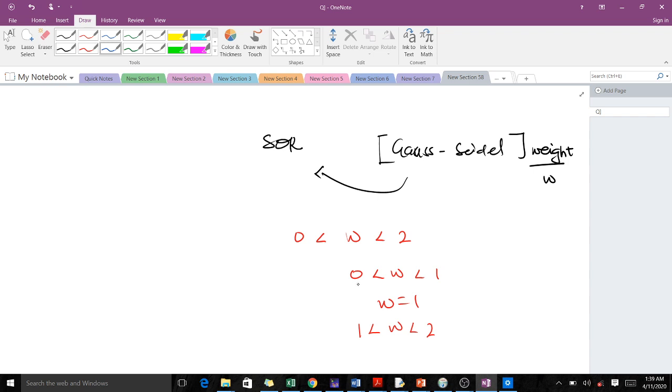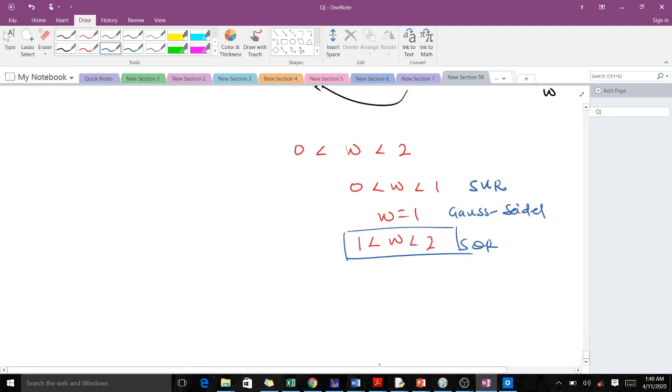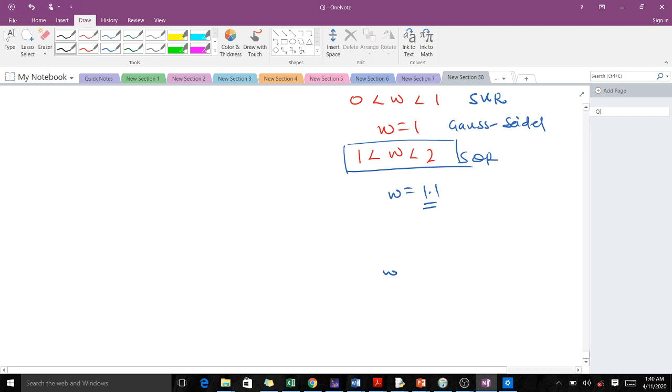When our weight is between zero and one, we say we are doing successive under relaxation. When our weight equals one, we have the Gauss-Seidel. If our weight omega is between one and two, we have the successive over relaxation. For the successive over relaxation, we mostly deal with omega values between one and two, and preferably we mostly use omega equals 1.1.